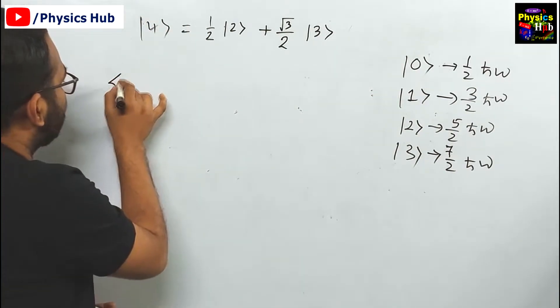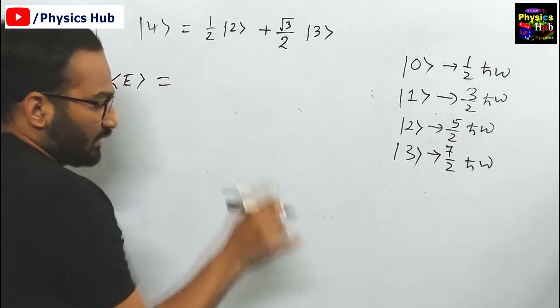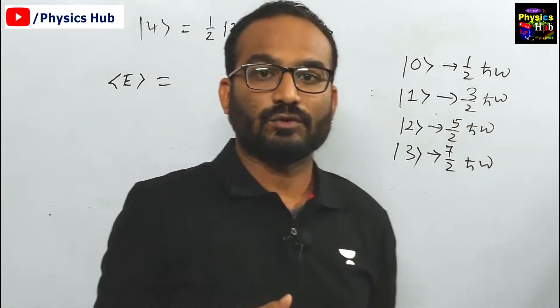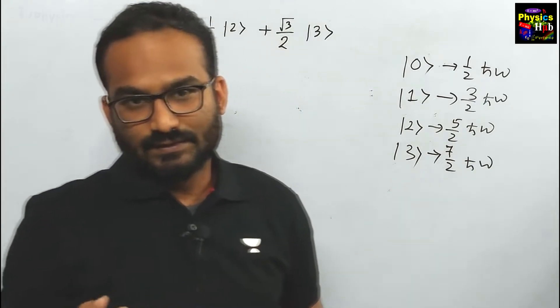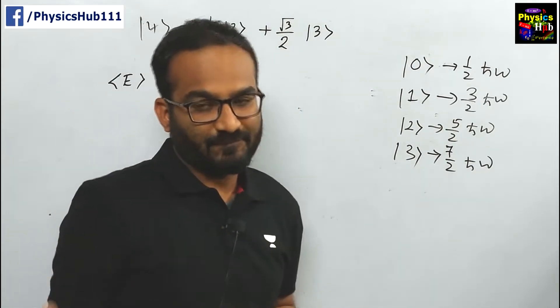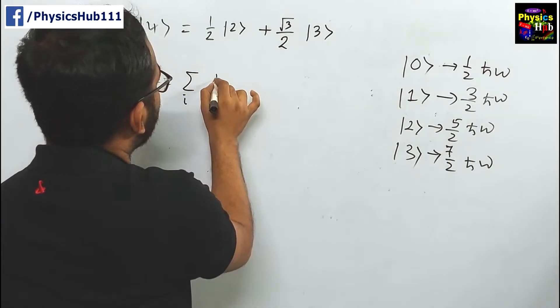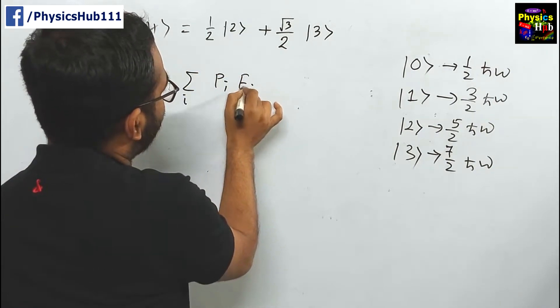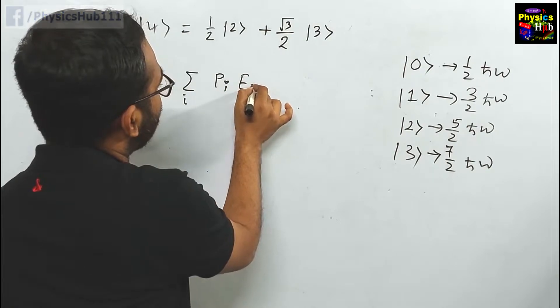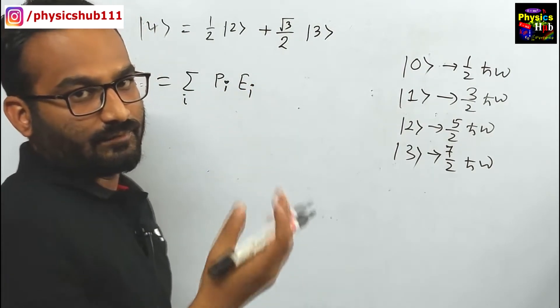Finding average energy is very easy using quantum mechanical postulates. I have discussed these postulates many times. The formula is ⟨E⟩ = Σᵢ pᵢEᵢ, energy times probability of getting that energy.